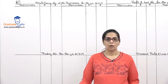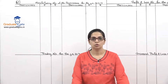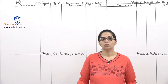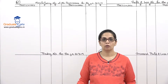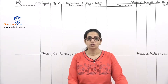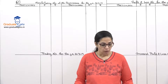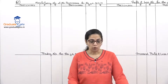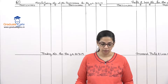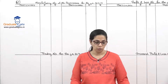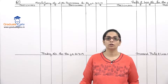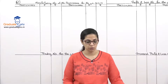Hello everyone, welcome back to a new session at Graduate Guru. Presently we are doing our topic Final Accounts of Manufacturing Concerns. We are on question number 10. Mr. Profitmaker gives the following information and trial balance and asks you to prepare final accounts for the year ended 31st March 2019.